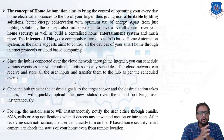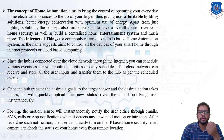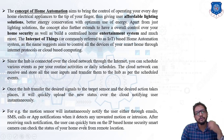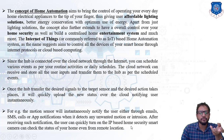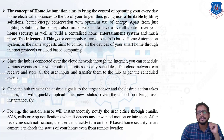The motion sensor will instantaneously notify the user via email, SMS, phone call, or app notification whenever it detects any unwanted motion in the house. After receiving a notification, the user can quickly switch on the smart cameras for home security and check the status of his home from any remote location.